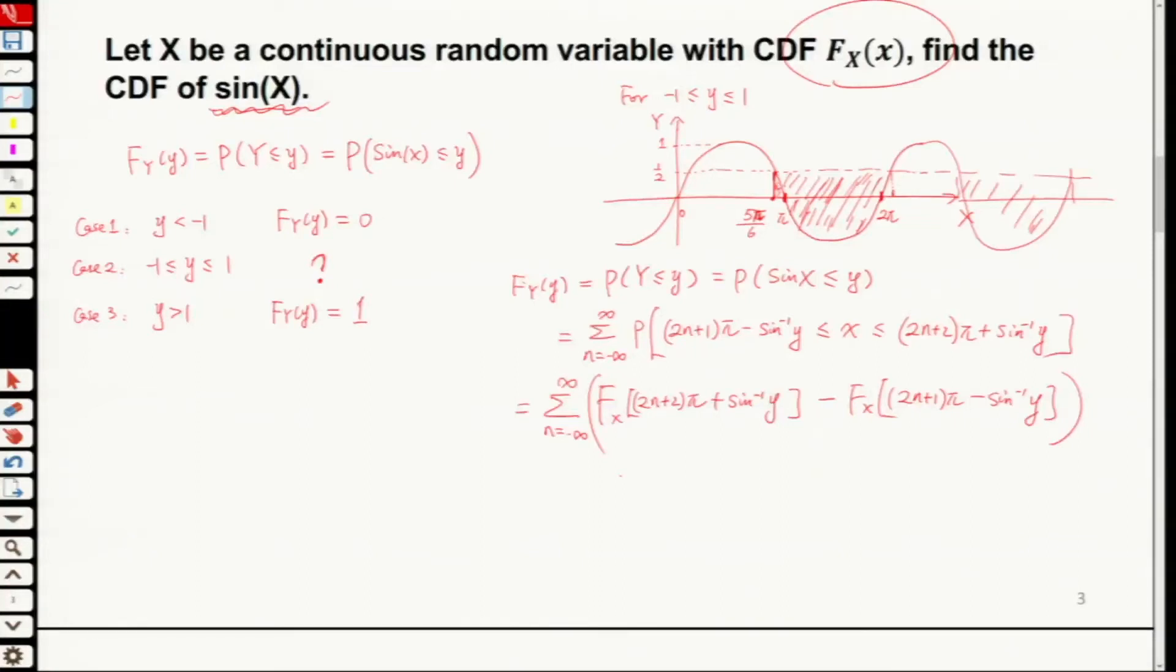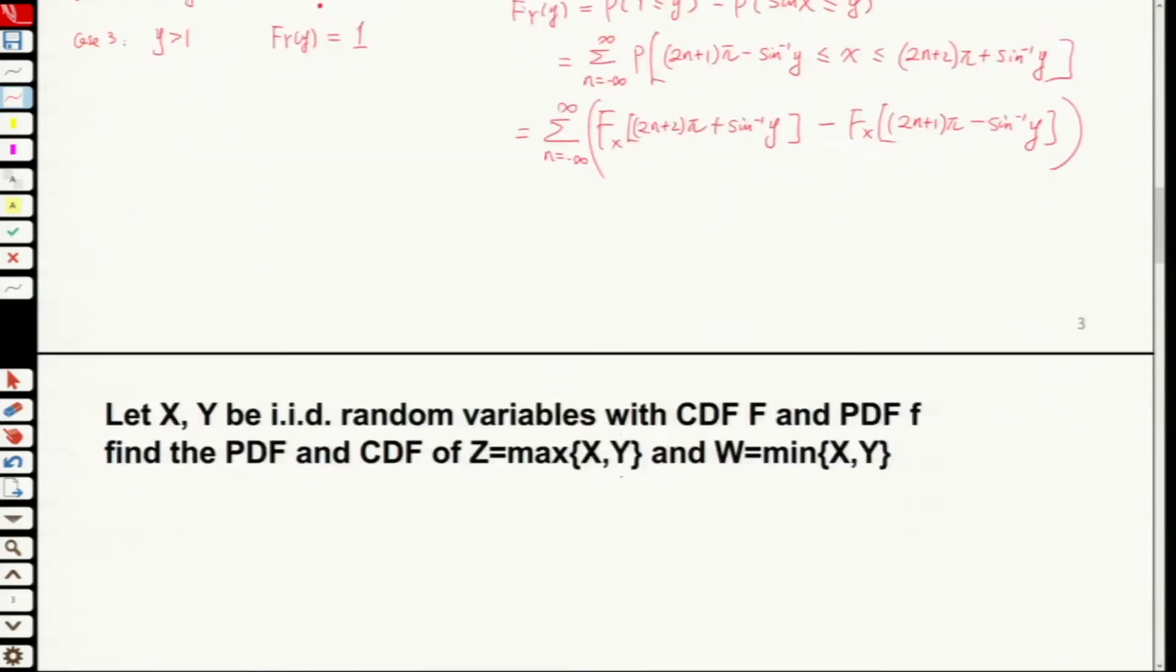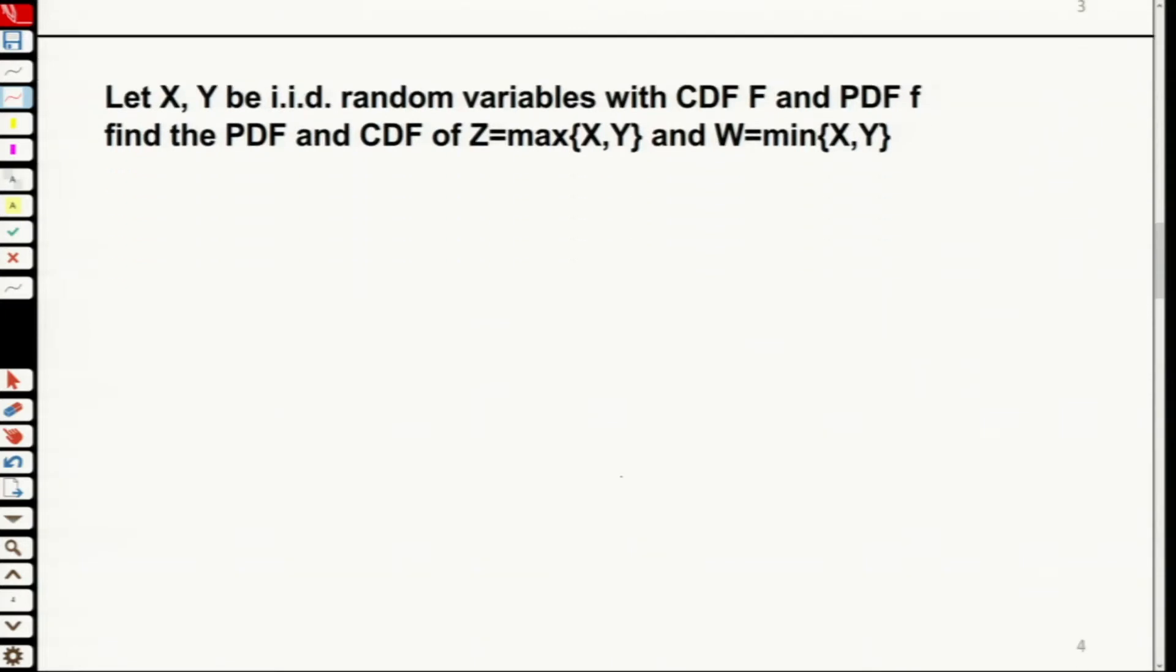So two functions right now. First one is squared, second one is sine. Now let's look at the other function. The next function will be maximum or minimum function.